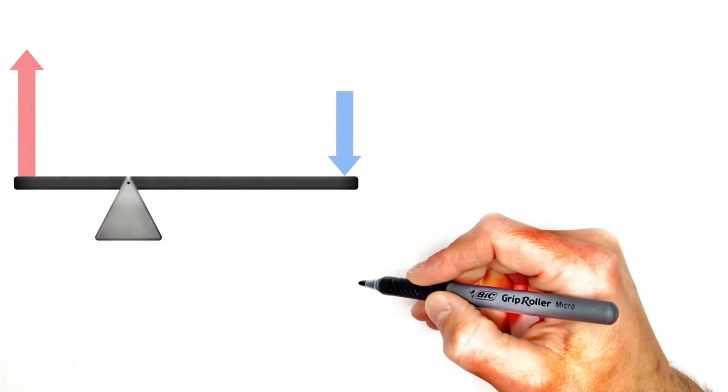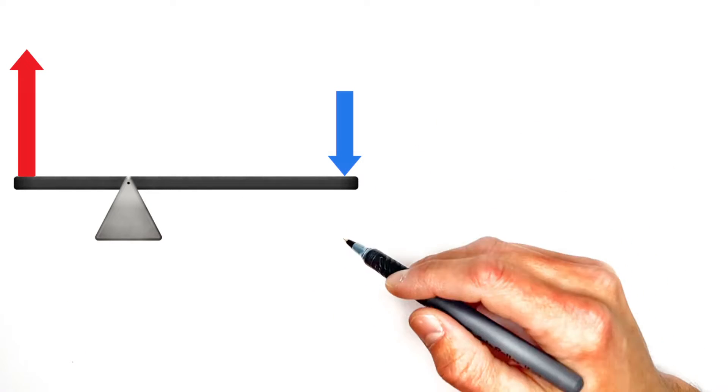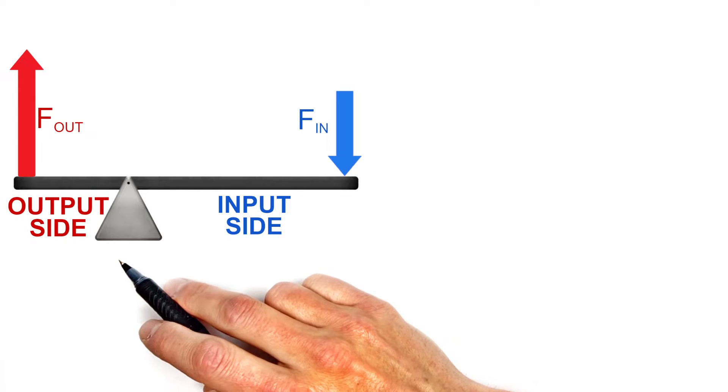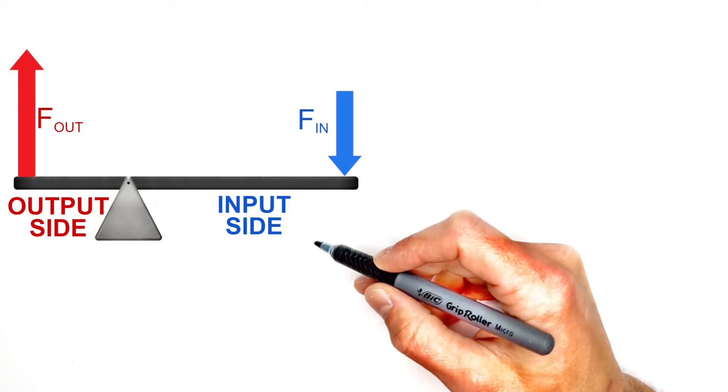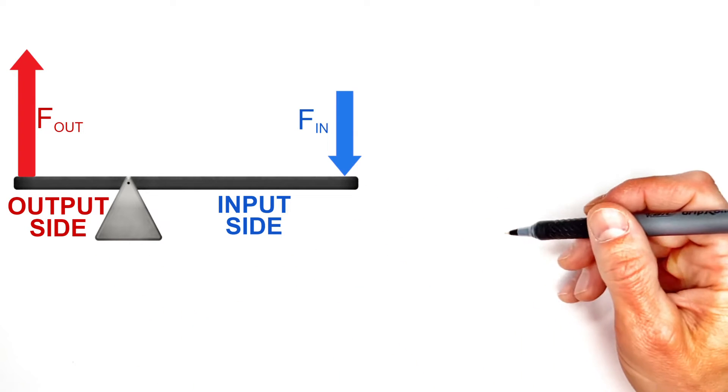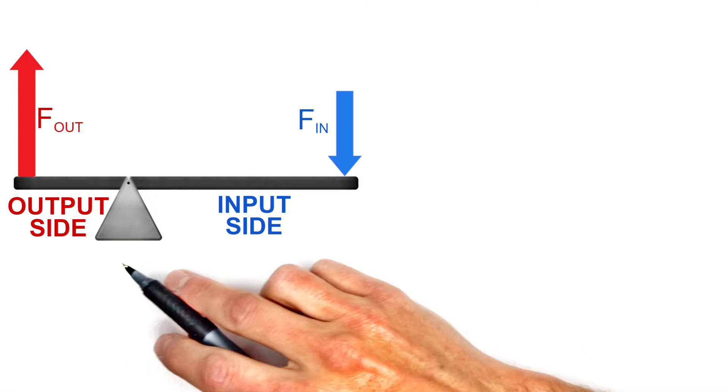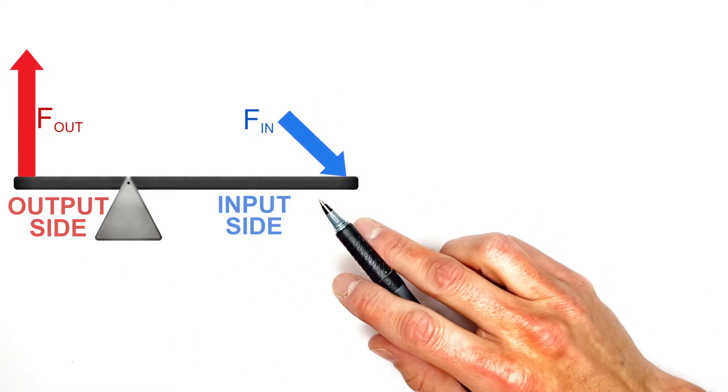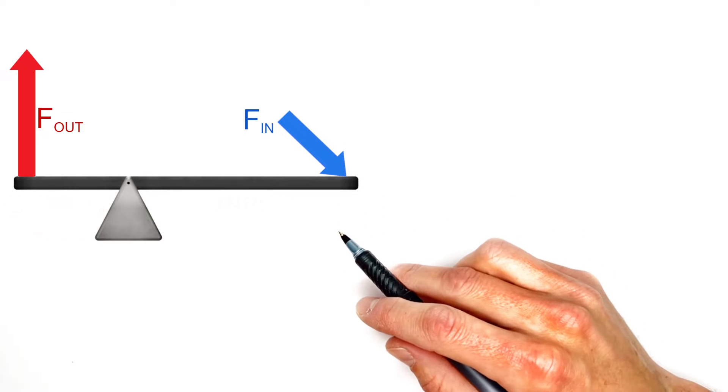So typically when talking about the mechanical advantage of a lever, we look at the input and output forces as though they act perpendicular to the lever. But today I want to show you how to find the mechanical advantage of a lever when the input force is not at a nice neat right angle to the lever.